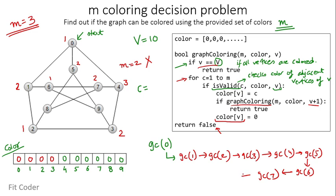We invoke GC(8). At vertex 8, colors 1 and 2 are already assigned to adjacent vertices, so we assign color 3 to vertex 8. We invoke GC(9). At vertex 9, vertex 6 has color 1 and vertex 5 has color 2, so we assign color 3 to vertex 9. We invoke GC(10).